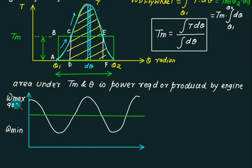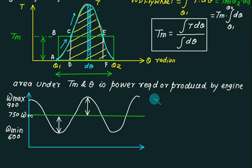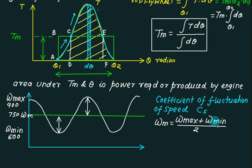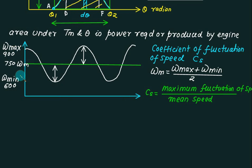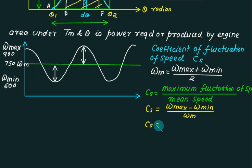During the cycle, the flywheel speed may be maximum, then decreases, then increases, then decreases again — and the cycle continues. For example, if the maximum value is 900 and the minimum is 600, then the mean speed is (900 + 600) / 2 = 750. The speed fluctuates from the mean on both the positive and negative sides. To account for this effect, we introduce the coefficient of fluctuation of speed. The mean speed is given by (ω_max + ω_min) / 2.